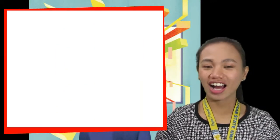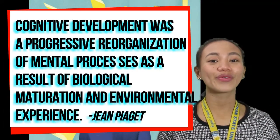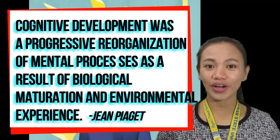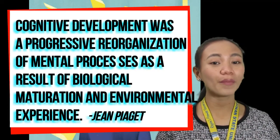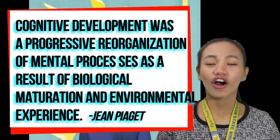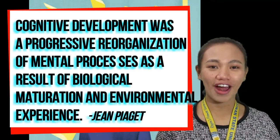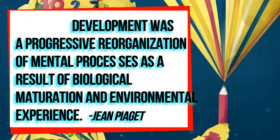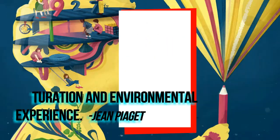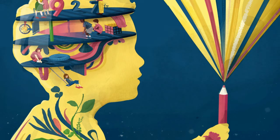To Piaget, cognitive development was a progressive reorganization of mental processes as a result of biological maturation and environmental experience. Children construct an understanding of the world around them, then experience discrepancies between what they already know and what they discover in their environment.